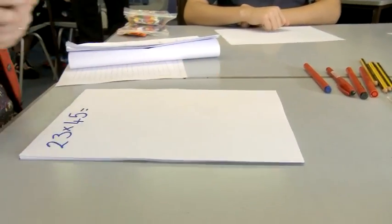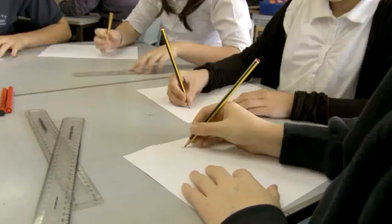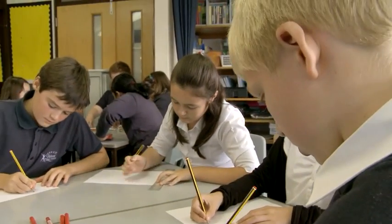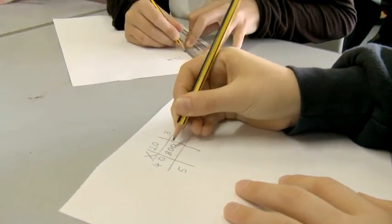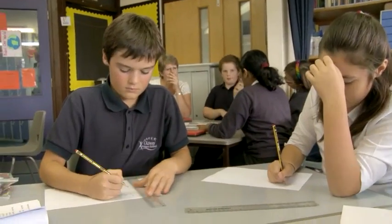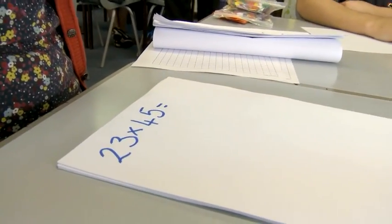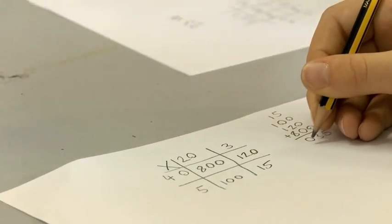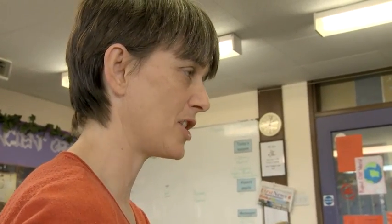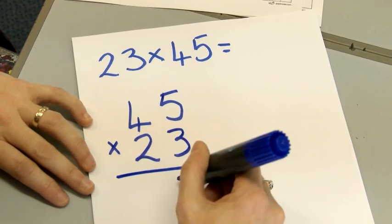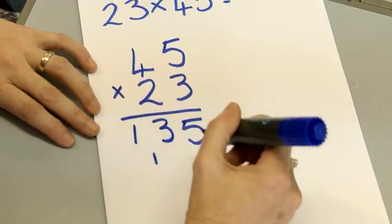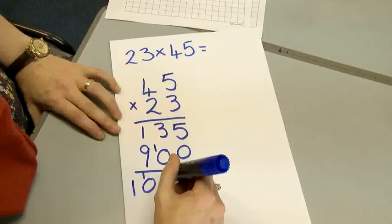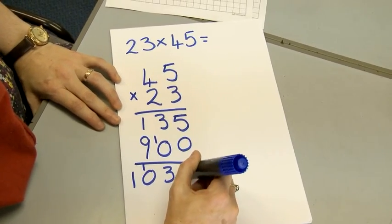Could you use the grid to have a go at that, please? Quick as you can. Have we all got 1,035? I'm going to show you my way of doing this calculation and I want to see what you think about it. And that gives you 1,035. So we've all got the same answer.